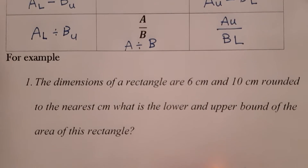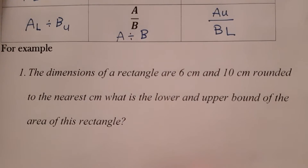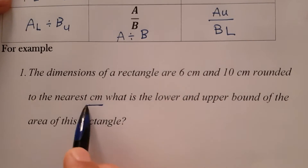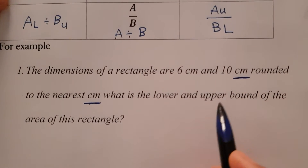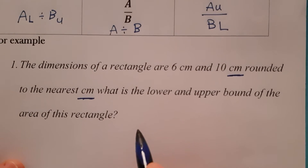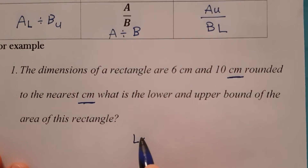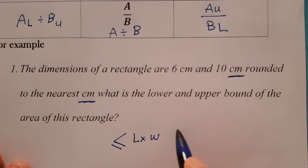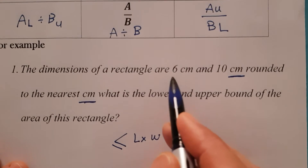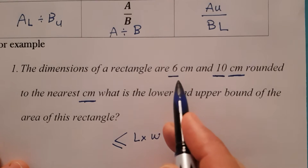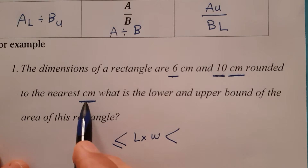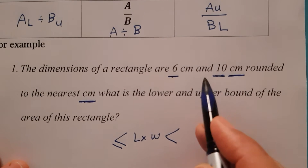Here is an example to understand this idea. The dimensions of a rectangle are 6 centimeters and 10 centimeters, rounded to the nearest centimeter. What is the lower and upper bound for the area of this rectangle? The area of a rectangle is length times width. I want the upper bound and lower bound, so I will not multiply 6 and 10 directly — I will multiply the lower bound of 6 by the lower bound of 10.